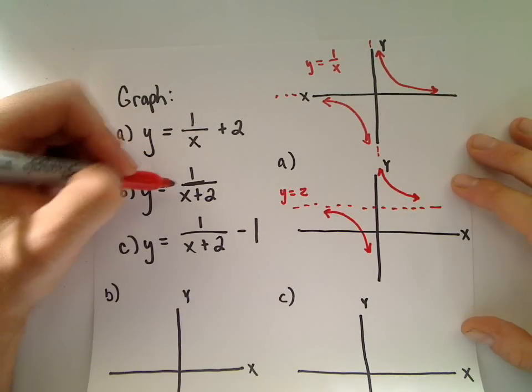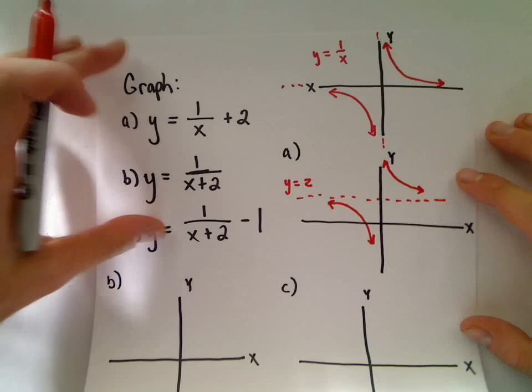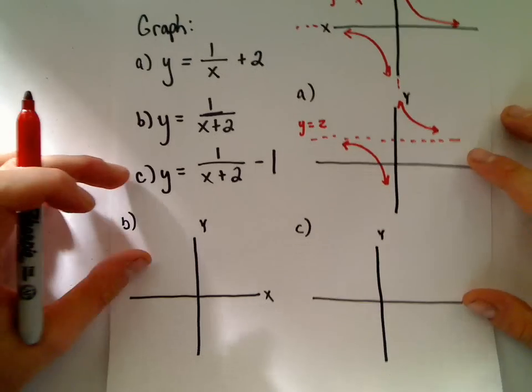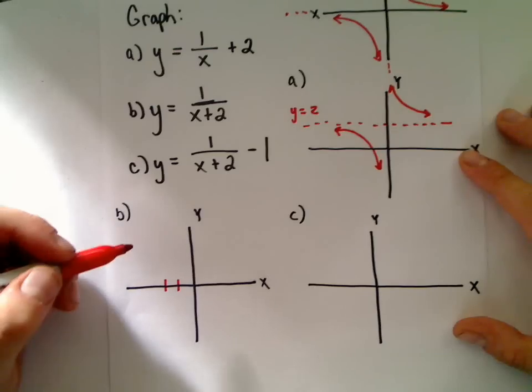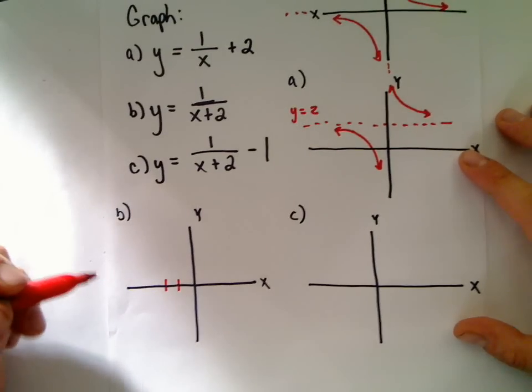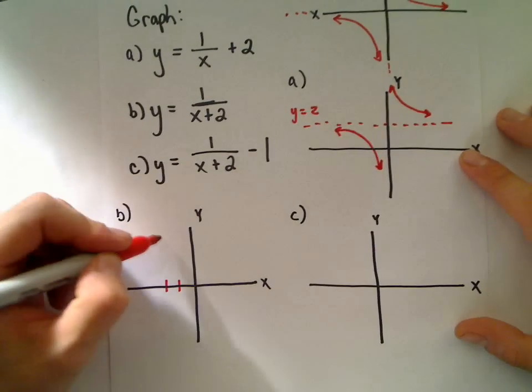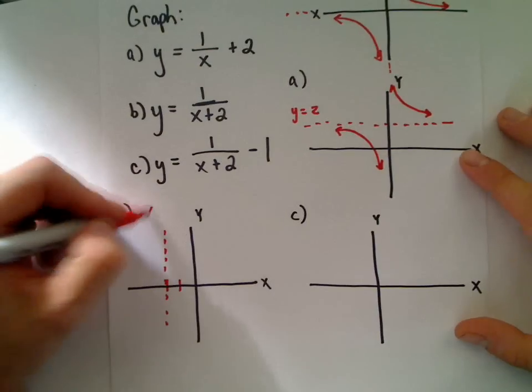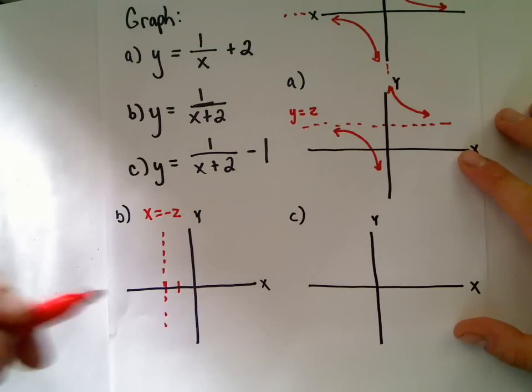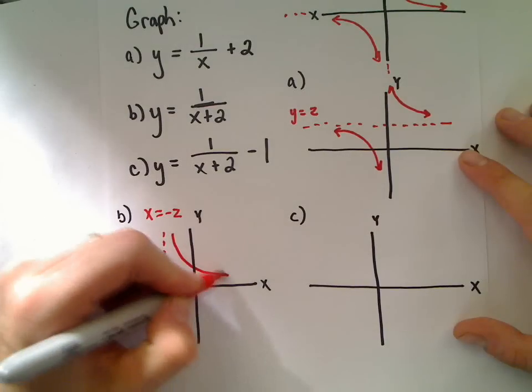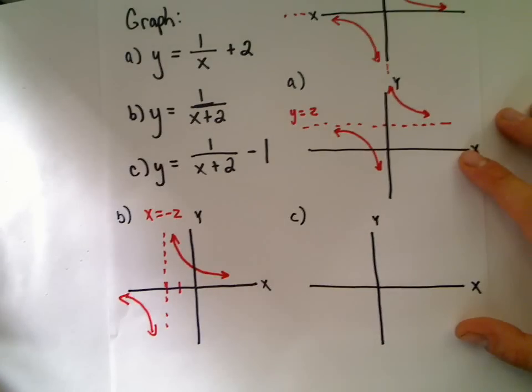On part b, I replaced the original x with x+2, like our first example. This shifts the graph 2 units to the left. The vertical asymptote that was on the y-axis is now at x = -2. Otherwise, it still has the same basic shape.